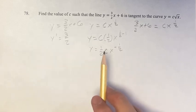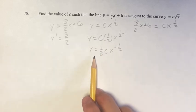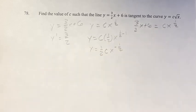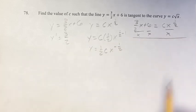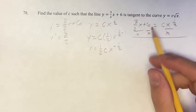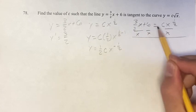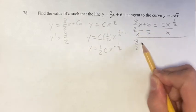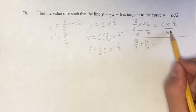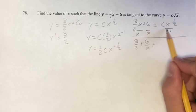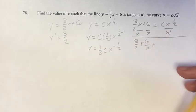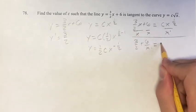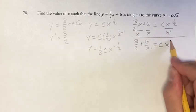Now we want to get this in the same form as this. If we divide this entire equation by x, then we can get 3 halves plus 6 over x, and x to the 1 half divided by x to the first. You subtract the exponents, so you get cx to the 1 half minus 1, which is negative 1 half.